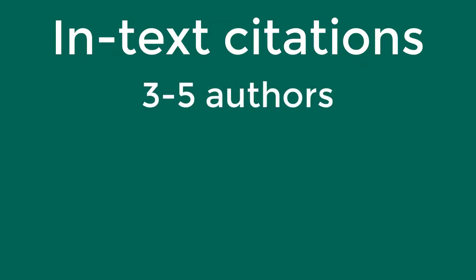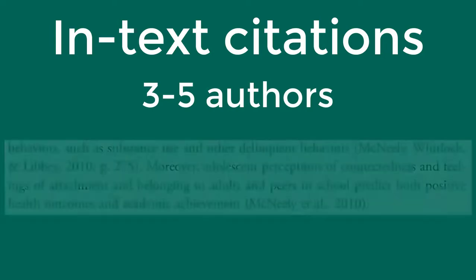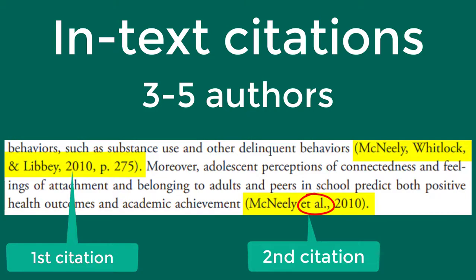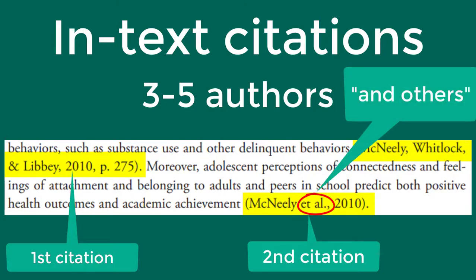If the material you are citing has between three to five authors, you are going to list all the authors' names the first time you cite, followed by a comma, then the year. Every additional time you cite that resource, you include the first author's name and the words et al., period, comma, then the year of publication. Et al. is a Latin phrase that means 'and others,' and it replaces the other authors' names. Pay attention to where the period and comma go for this.